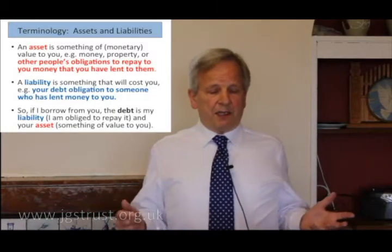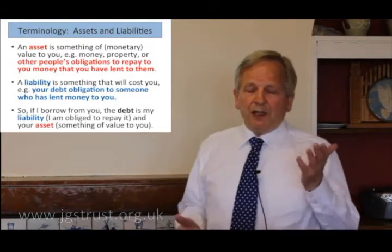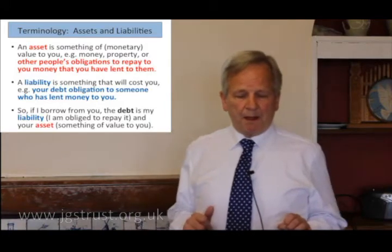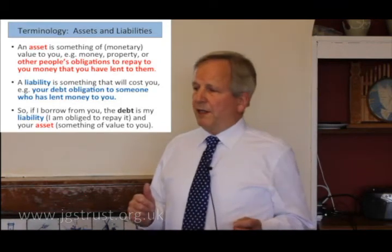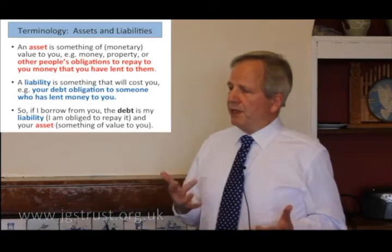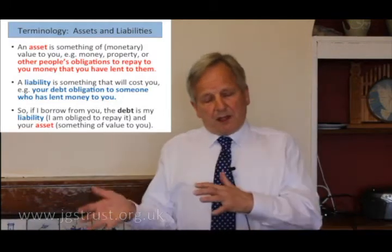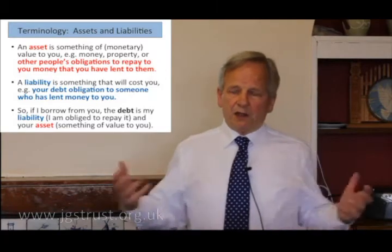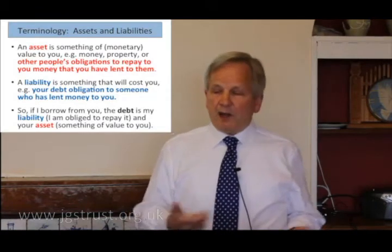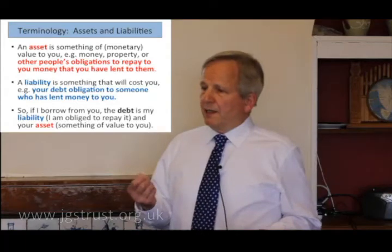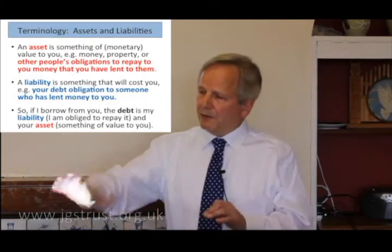An asset, in our context — we're talking about monetary assets — is obviously something of value. It can be property, but it also can be bonds or debts: other people's obligations to pay you money at some time in the future. Conversely, on the other side of that equation there are liabilities — something which is going to cost you, an obligation to somebody else to pay them money back. So if I borrow money from you, there's a dual aspect to that debt: it's my liability because I owe you, and it's your asset because you have a claim on me in the future.